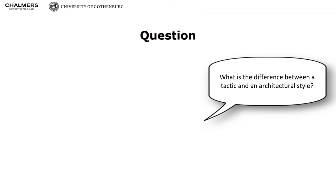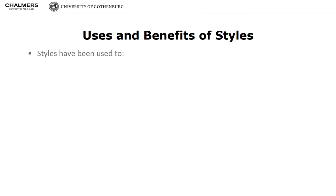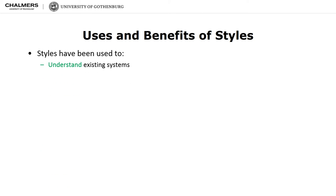As we will see, tactics are elementary design decisions that may act as building blocks of styles. Towards the end of this lecture series, this distinction will be made clear. Styles are named collections of design decisions that have been used to understand existing systems, document proven best practices, and build new systems.